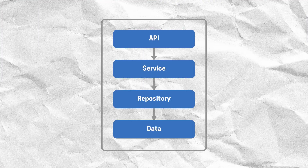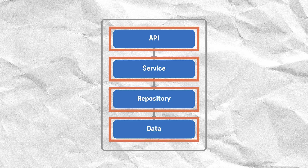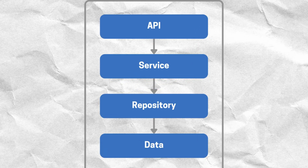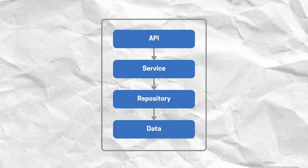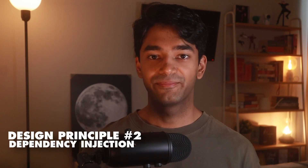Now that I've shown you the layered architecture, the next question is how do we actually create these layers? Each layer depends on the layer below it — we can't have an API layer without a service layer, and we can't have a service layer without a repository layer, and so on. This means we need to build our application from the bottom up. And this is where our second design principle comes in, which is called dependency injection. Instead of each layer creating its own dependencies, we'll pass them from the outside.